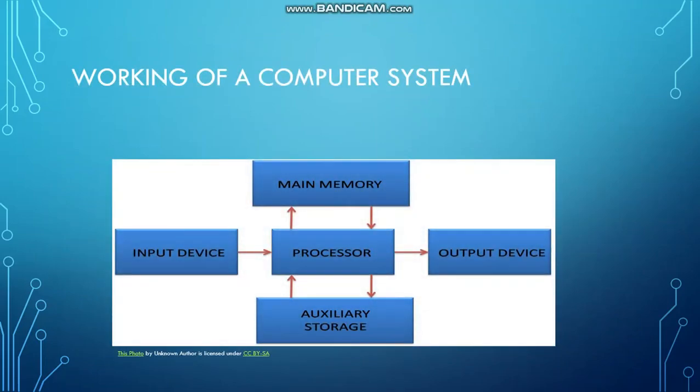This is a block diagram of a computer system. As you can see it consists of five parts. Let me start with input device. What is an input device? Mouse, keyboard — these all are input devices. By using input devices we can put an input in our machine.